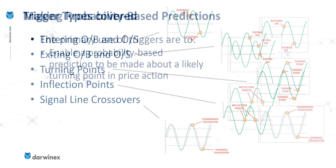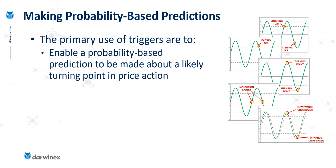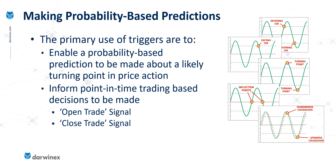The whole purpose of using triggers in this way is to enable us to have a probability-based prediction about what's going to happen in the market next. Usually this is something to do with a turning point in the price action, and based on that intelligence, we can then make decisions such as opening trades or closing trades, all based around the timing of those triggers.